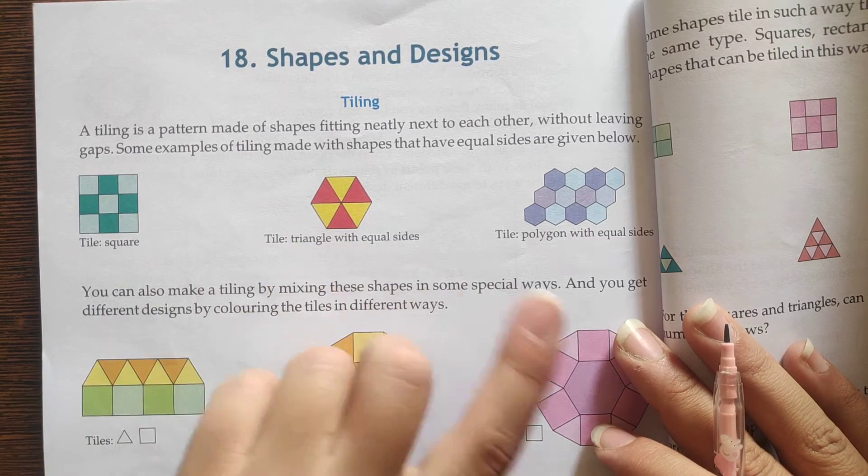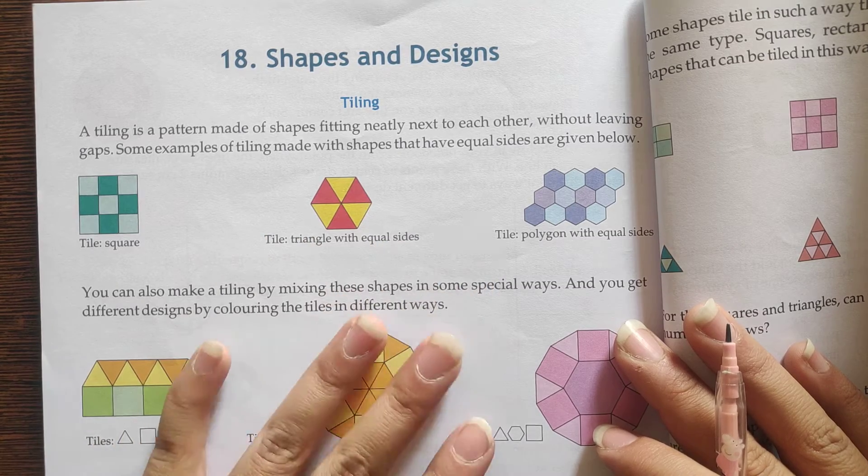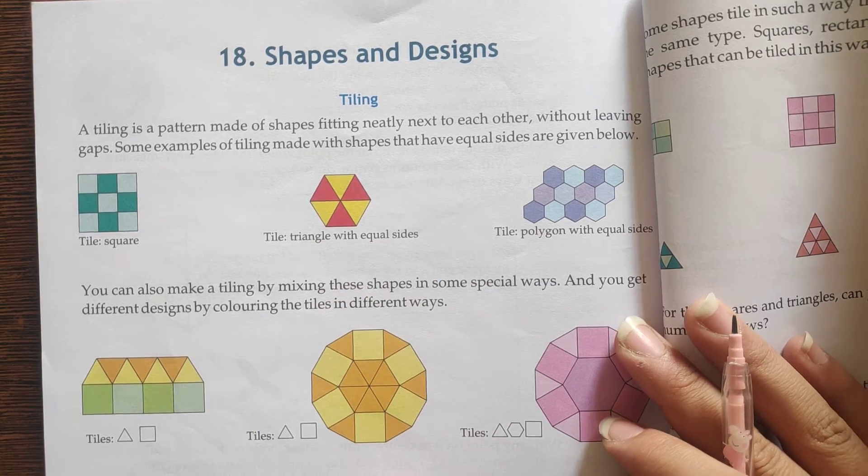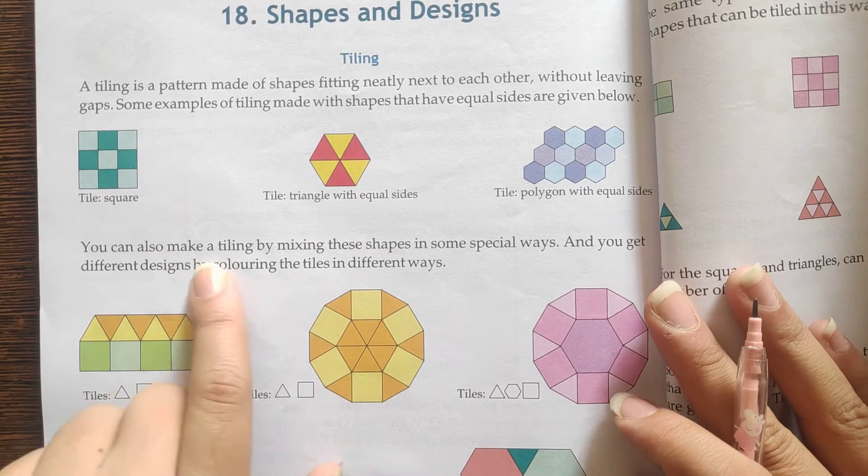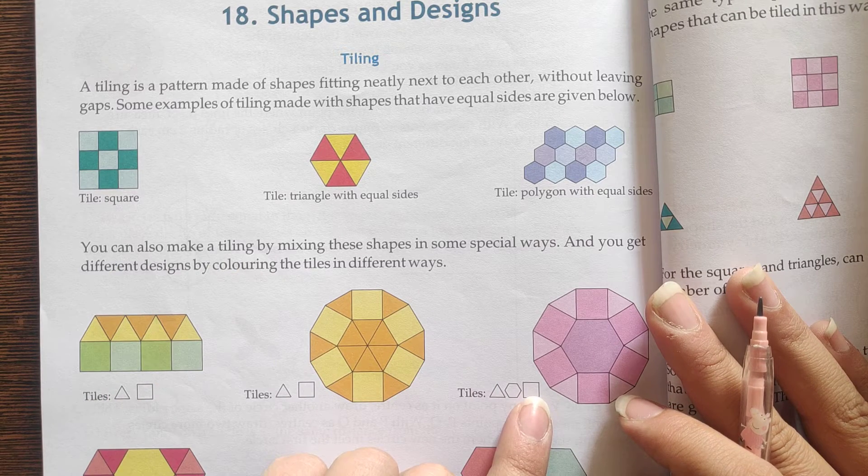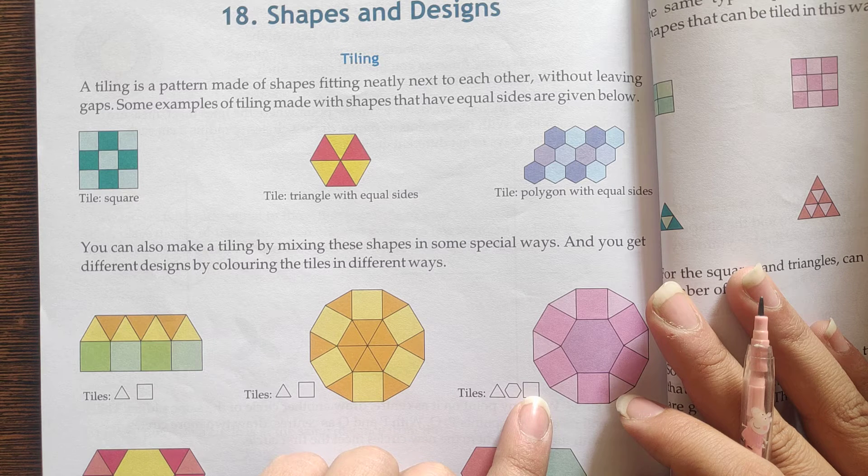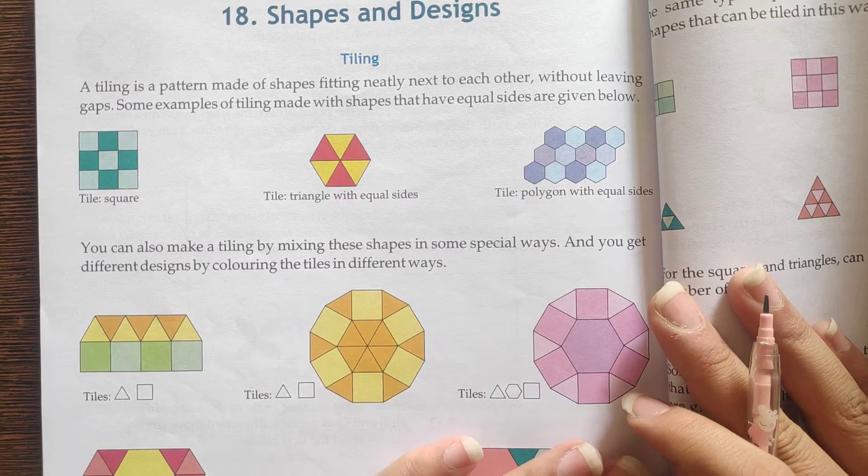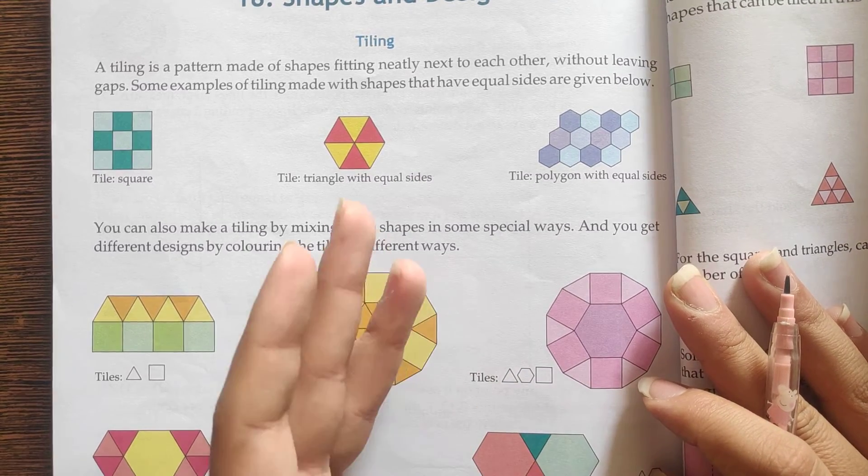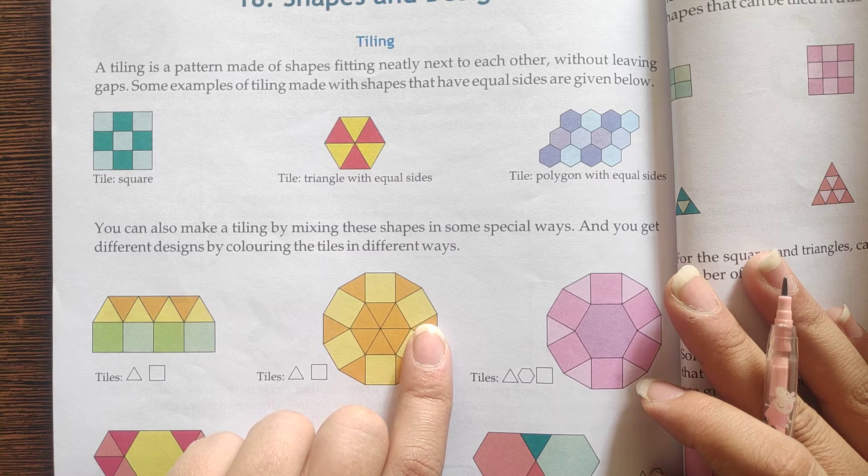Clear? These are some examples. You can also make a tiling by mixing these shapes in some special ways. And you get different designs by coloring the tiles in different ways. So students, they say that you can also make different shapes and different designs.